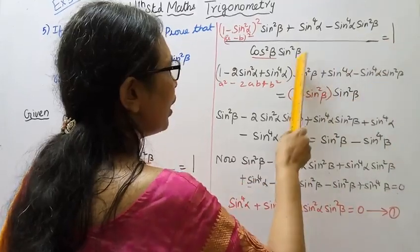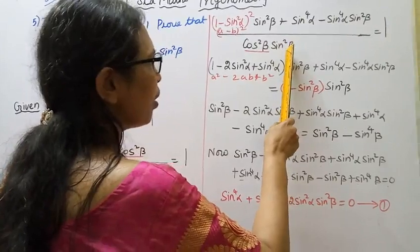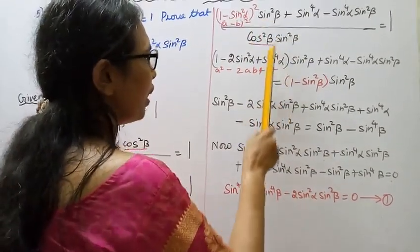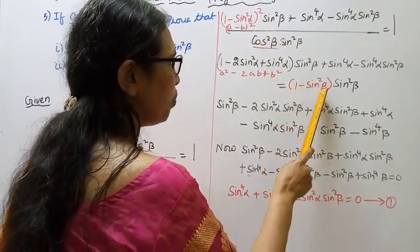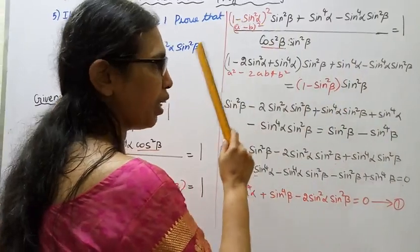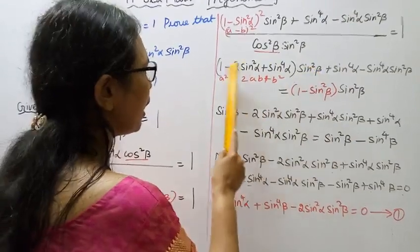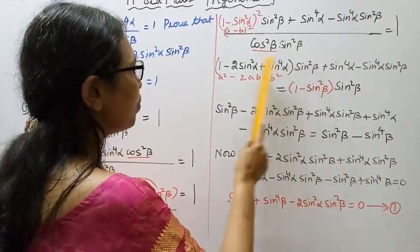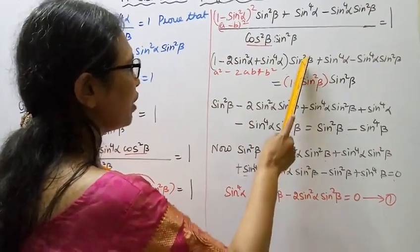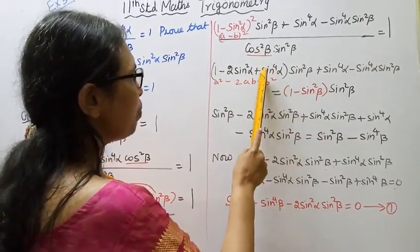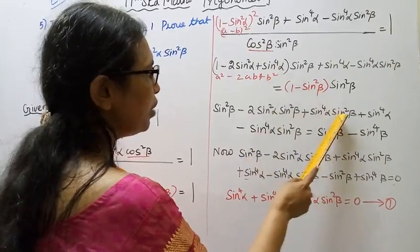Sin power 4 alpha minus sin power 4 alpha sin square beta, divided by cos square beta sin square beta equal to 1. Now cos square beta equal to 1 minus sin square beta, so 1 minus sin square beta into sin square beta. Multiplied by sin square beta: sin square beta into 1 minus sin square beta. Sin square beta into 2 sin square alpha minus 2 sin square alpha sin square beta, plus sin power 4 alpha sin square beta.